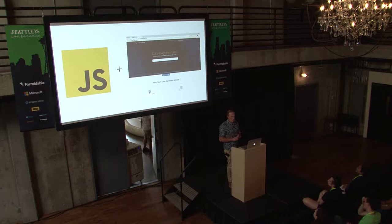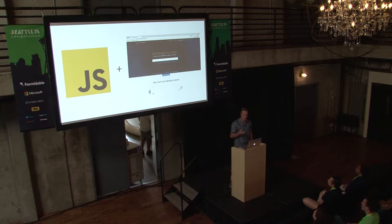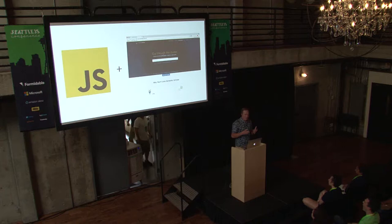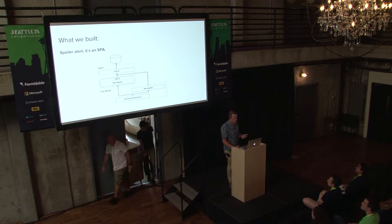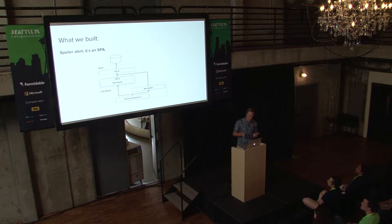Semantic Scholar is an application that provides a cutting-edge academic search engine. Think of it like Google Scholar, but with a lot more under the hood. The idea is that we want to power something that allows researchers to do their job better by focusing less on finding research and more on the research they're doing. So first, let's talk about what we built. Spoiler alert: it's an SPA.